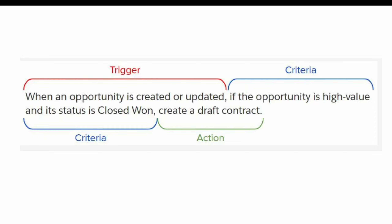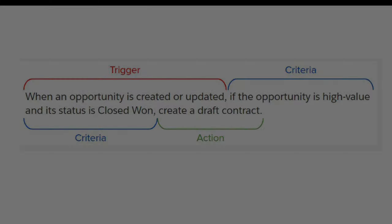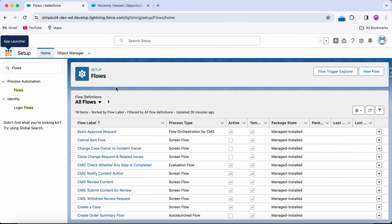If the opportunity is high value and its status is Closed Won — high value meaning the amount is greater than a certain value, in Trailhead it's $25,000 — so if the opportunity amount is greater than $25,000 and its stage is Closed Won, which is a picklist field value, then we have to create a draft contract. Let's hop into Flow Builder.